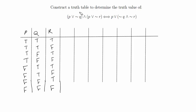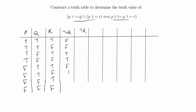Next, we look for any negations. We have not Q and not R, but there's no not P. So we add columns for not Q and not R. For not Q, you just look at the Q column and put the opposite: false, false, true, true, false, false, true, true. For not R, you do the same thing: false, true, false, true, false, true, false, true.